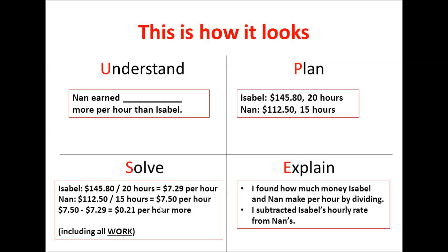And once I found that out, I subtracted because once I have their hourly wage, I still need to know how much more Nan earns per hour. And you have to show your work in this one too. And my explanation, I found out how much money Isabel and Nan make per hour by dividing. And then I subtracted the hourly rate. Notice how brief this is. This doesn't need to be a big old paragraph. And once again, no numbers for explaining what's happening, not explaining all the steps that you did. Not regurgitating the steps that you did.